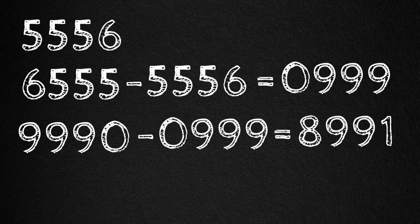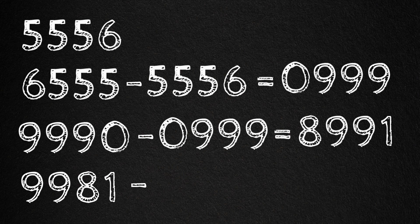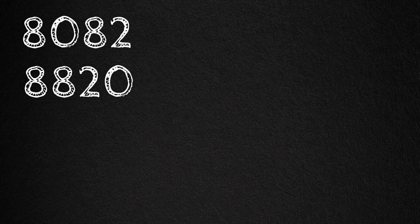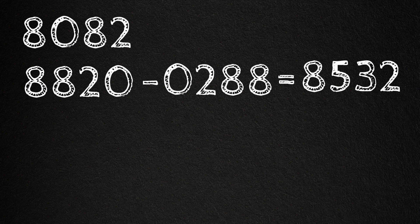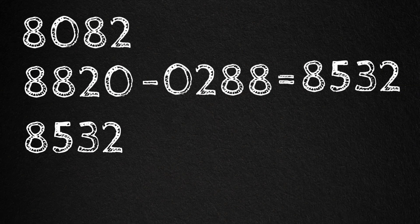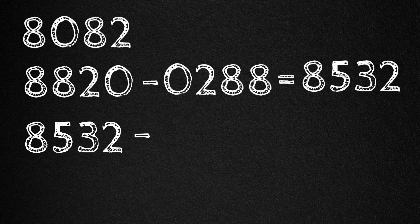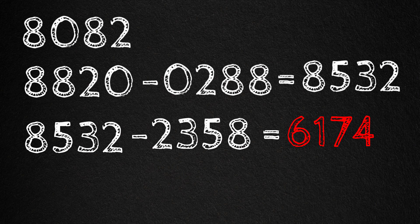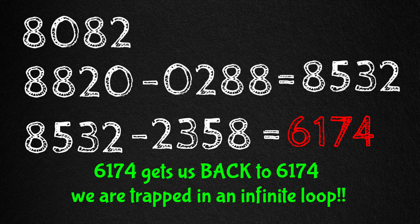Rearranging the digits, 9981 minus 1899, we get 8082. Rearranging that, we have 8820 minus 0288, and we get 8532. And one more time, 8532 minus 2358, and we get 6174. Once again, we've been captured by the mathematical black hole in just five steps.